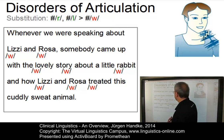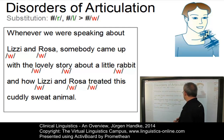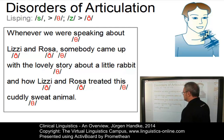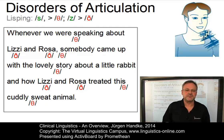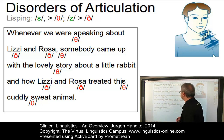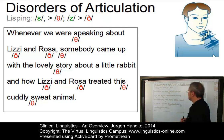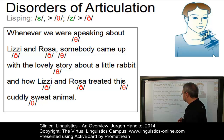The result of such substitution would be something like: 'whenever we were speaking about Whizzy and Woza, somebody came up with a wobbly story about a little wabbit and how Whizzy and Woza tweeted this cuddly sweet animal.' Another effect is referred to as distortion, where the most well-known example is lisping. Here we make an attempt at a correct sound but the result is poor. In lisping, the alveolar fricatives /s/ and /z/ are replaced by their dental counterparts, resulting in: 'whenever we were speaking about Lizzie and Roza, somebody came up with a lovely story about a little rabbit and how Lizzie and Roza treated this cuddly sweet animal.'